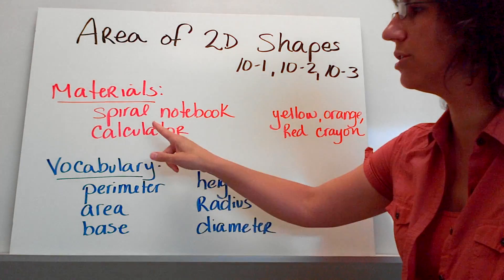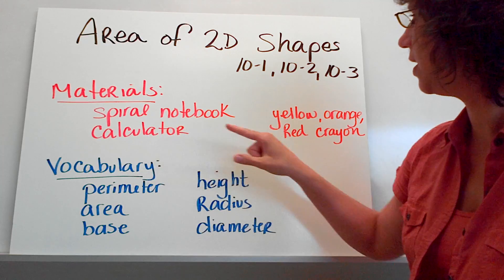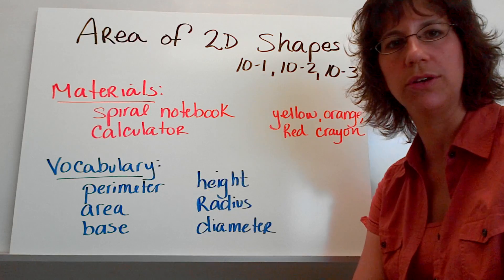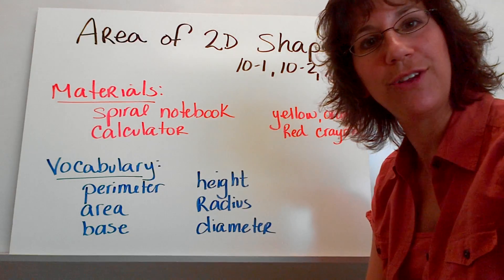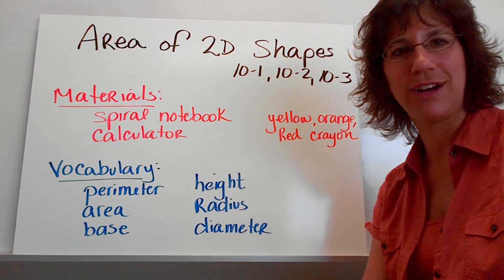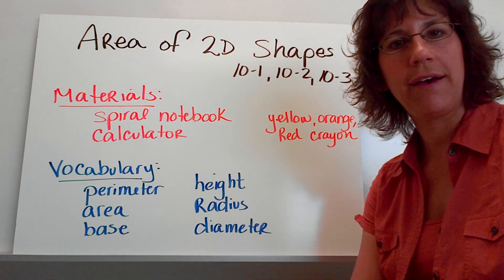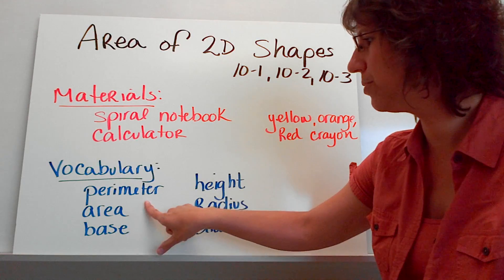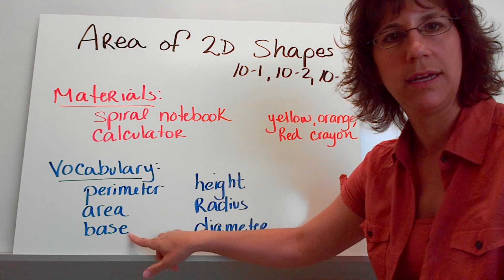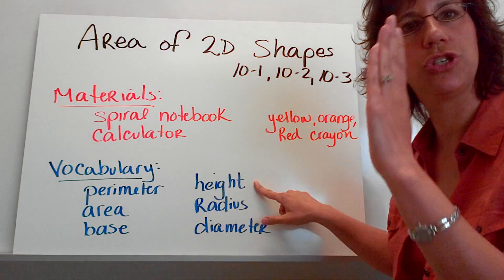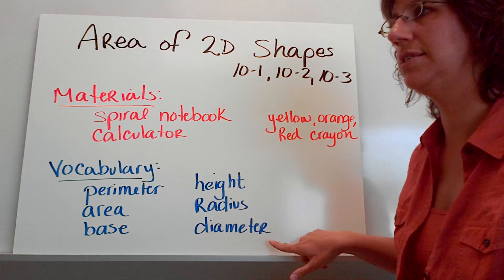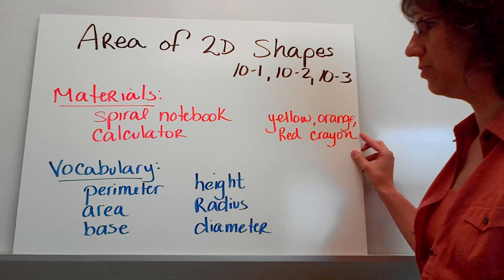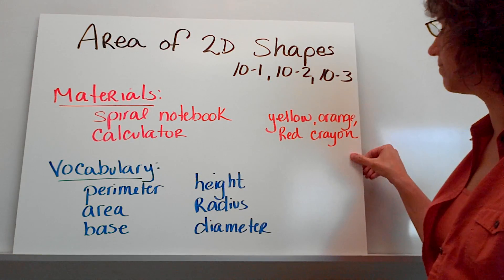So as you can see here, the materials you're going to need: your spiral notebook, calculator, a yellow, orange, and red crayon. That's what you're going to need every time you watch one of these videos. So go ahead and pause me if you need to and grab those materials and then we'll get started. If you have the materials already, just go ahead and start looking at the vocabulary you're going to need to know: perimeter, area, and base. Base meaning bottom of the shape, height, straight up and down, radius and diameter. The difference between those two. You're going to want to make sure you understand how radius and diameter relate to each other.